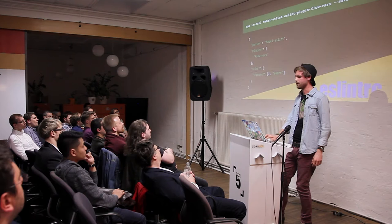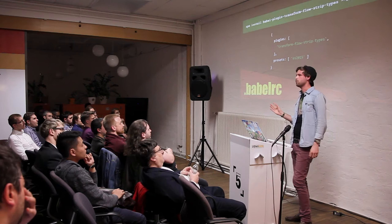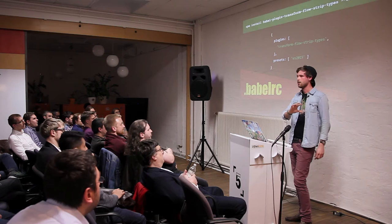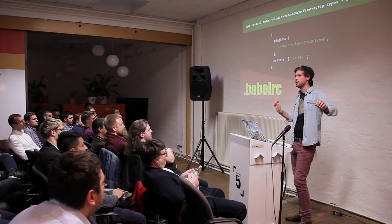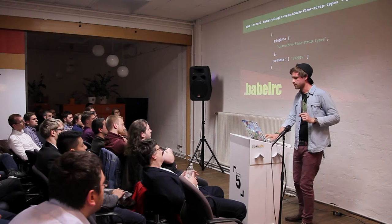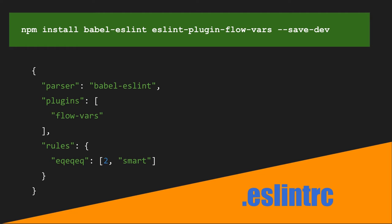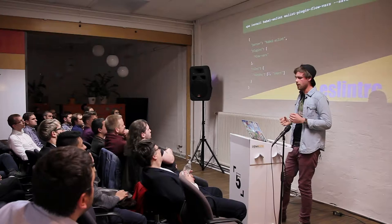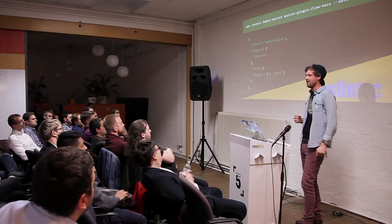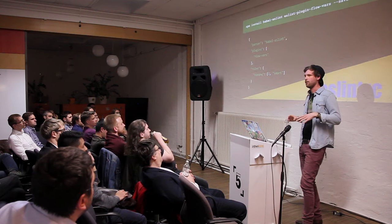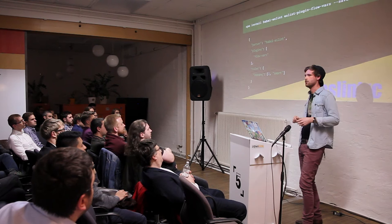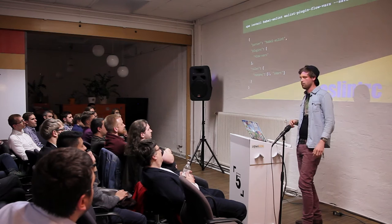For ESLint: Babel has its own AST parser, Flow has its own, and ESLint uses Esprima — these are different systems. Since ESLint is super modular, you can replace its parser. We use the 'babel-eslint' package, which uses Babel's parser for AST generation. Another recommended plugin is 'eslint-plugin-flowtype' — by default ESLint complains about unused variables when you use type annotations, and this plugin keeps that noise down.